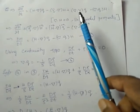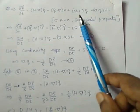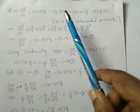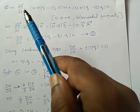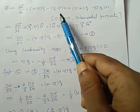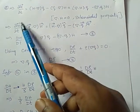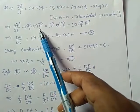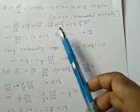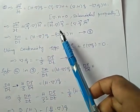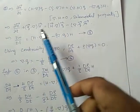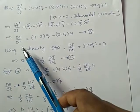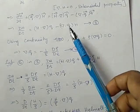Because of solenoidal property, del dot H is zero and this equation becomes del H by del t. I have shifted this term to LHS plus q dot del H. Remaining terms: H dot del q minus del dot q H. This we can write as dH by dt with these two terms remaining.